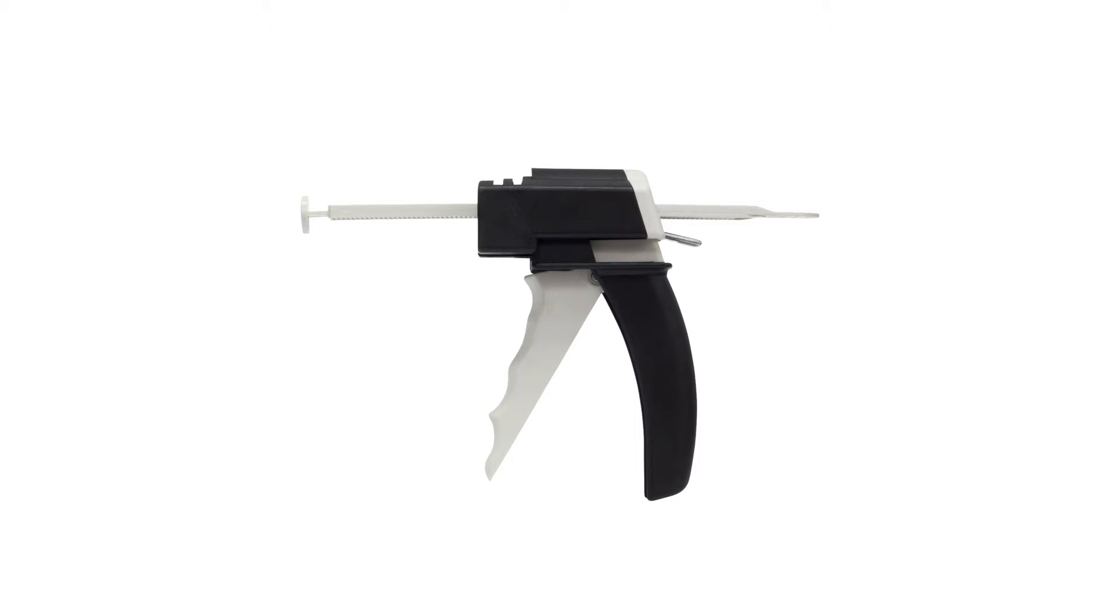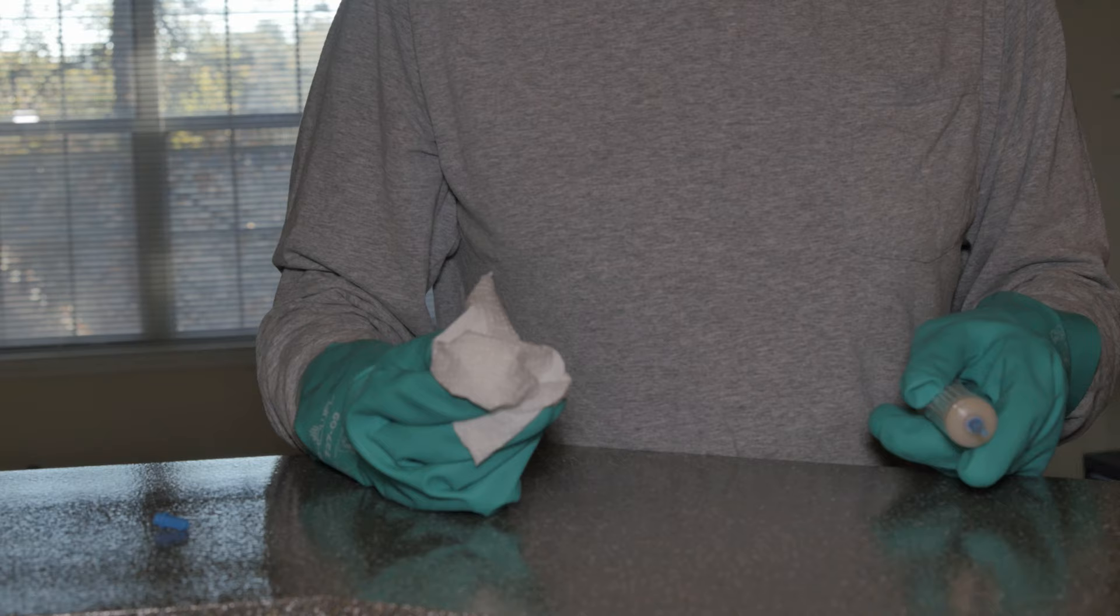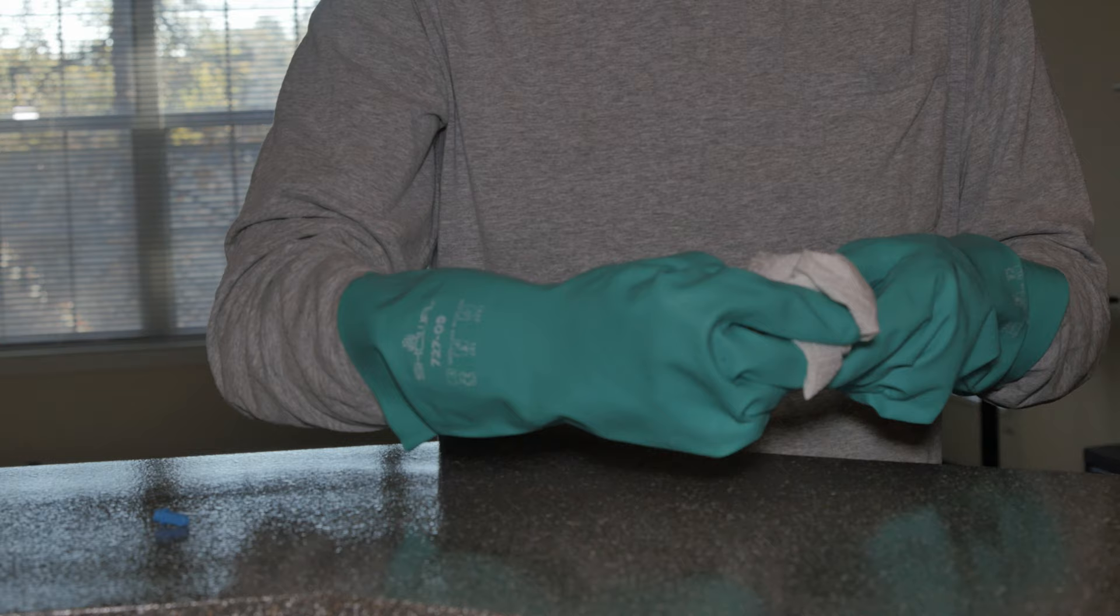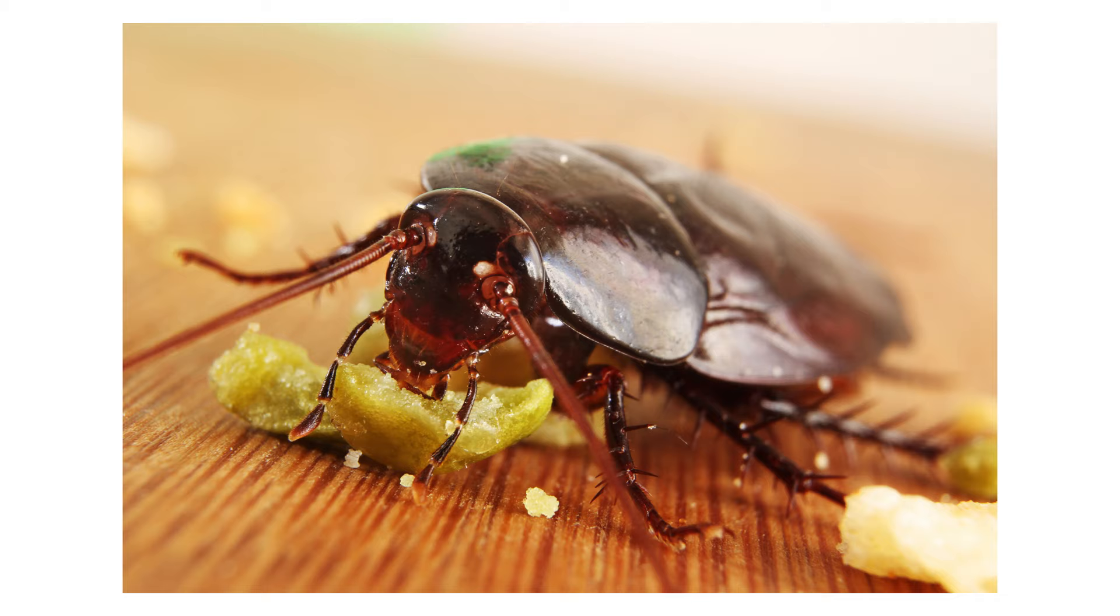For a more precise application, you can also use a professional bait gun to apply the roach bait gel. You may also want to keep a paper towel handy to wipe the application tip of the gel, keeping the tube clean in case the bait leaks slightly when applying.